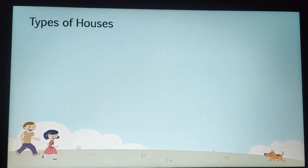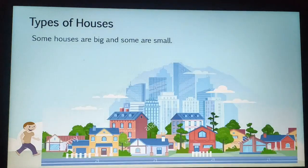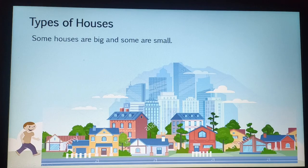Types of houses — there are different types of houses. Some houses are big and some are small. In this picture you can see that the houses at the back are very tall and big, while the ones in front are smaller. So like this, some houses are big and others are small.